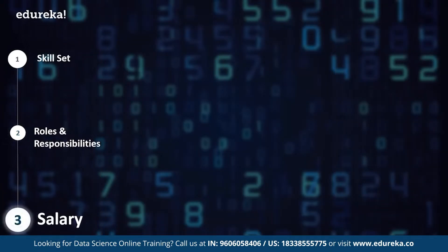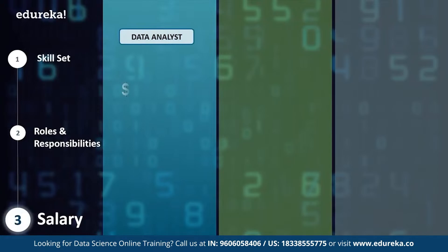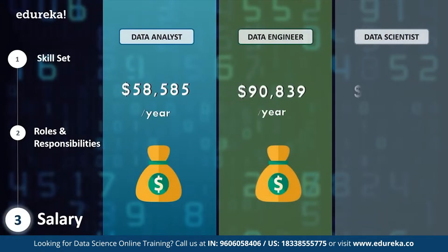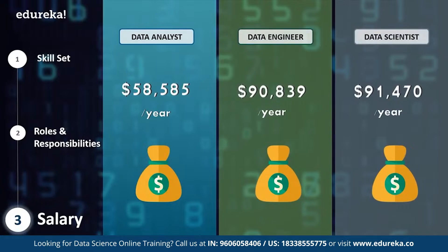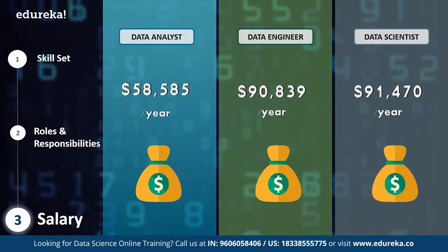Now let's look at how much you can earn by getting into a career in data analytics, data engineering, or data science. The typical salary of a data analyst is just under $59,000 per year, whereas a data engineer can earn up to $90,839 per year, and a data scientist can earn up to $91,470 per year. While data engineer and data scientist salaries may not look very different at first, delving deeper into the numbers, data scientists can earn 20 to 30% more than an average data engineer. Companies like Facebook and IBM have been known to post salaries up to $136,000 per year.